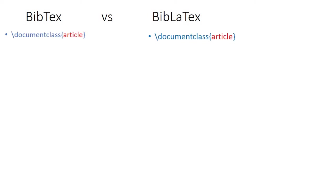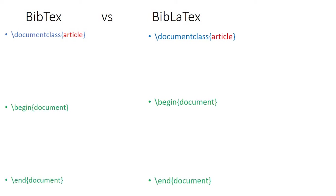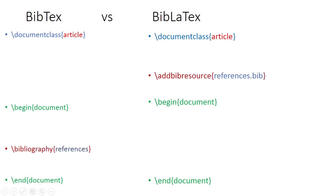The \documentclass command will be the same for both. \begin{document} and \end{document} are also the same in both BibTeX and BibLaTeX. Now the differences begin. In BibTeX you type \bibliography and then the name of the file where you saved your references — but you do not give the .bib extension. However in BibLaTeX you write \addbibresource and then in curly braces you type the name of the references file with the .bib extension.